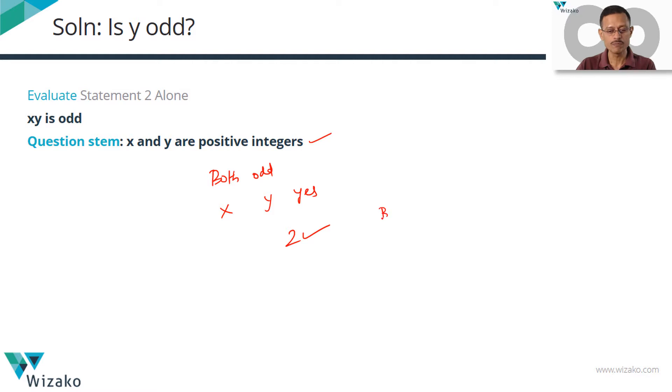So statement 2 alone is sufficient. We narrowed it down to choices B, C or E. At the end of statement 1, we can rule out these two. Answer choice B is the correct answer.